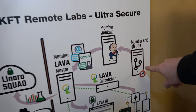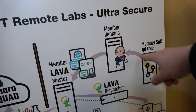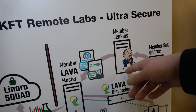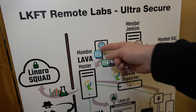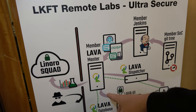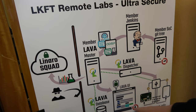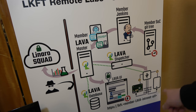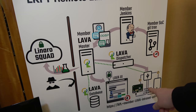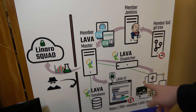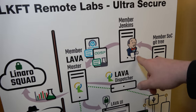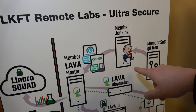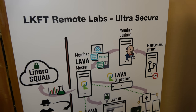On each push to the Git tree, be it Android or OpenEmbedded, those builds are sent to Lava and all the test execution goes there. That's Jenkins, building stuff.